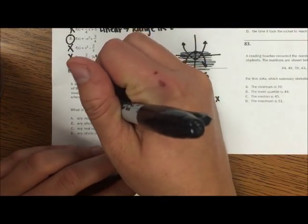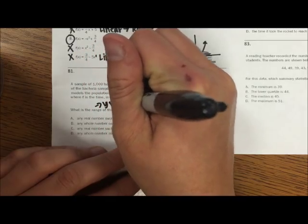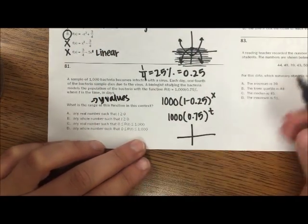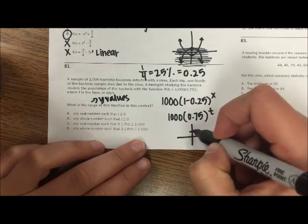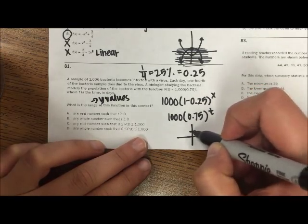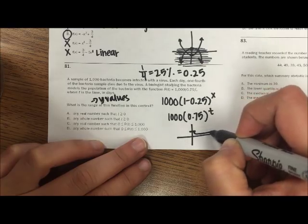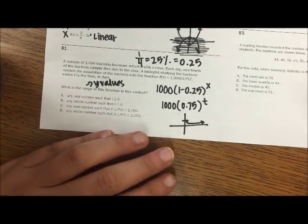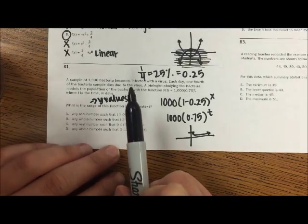So if I were to graph this, let's start at a thousand and I would be decaying. So if I started here and I would decay in the number of bacteria.